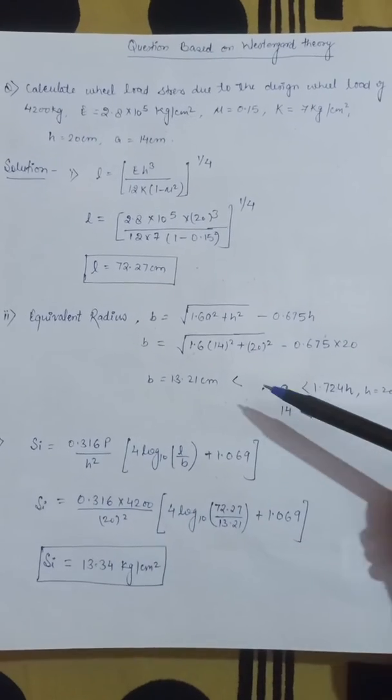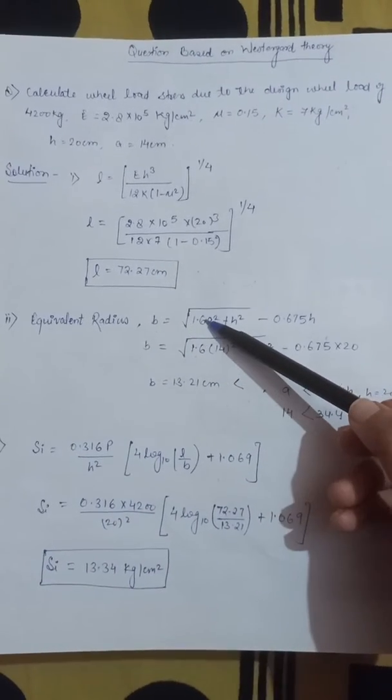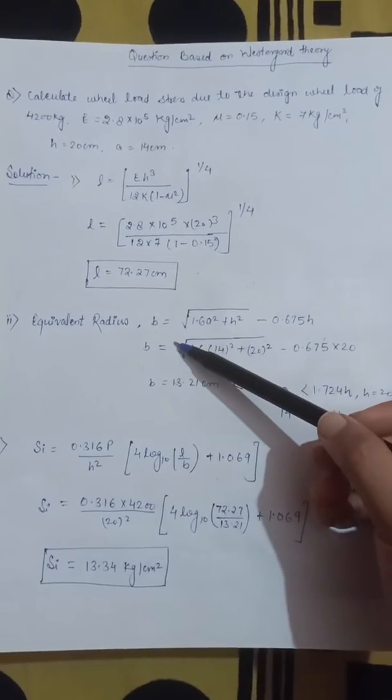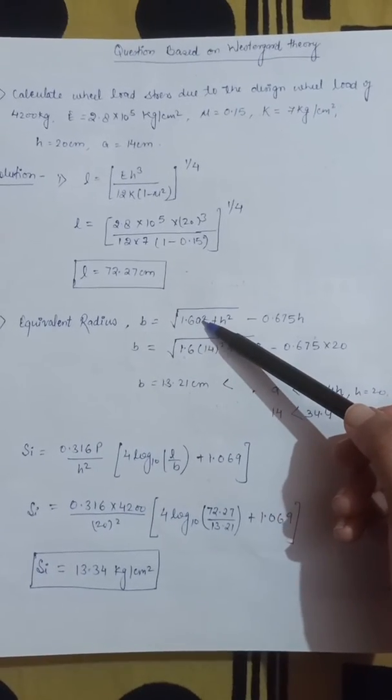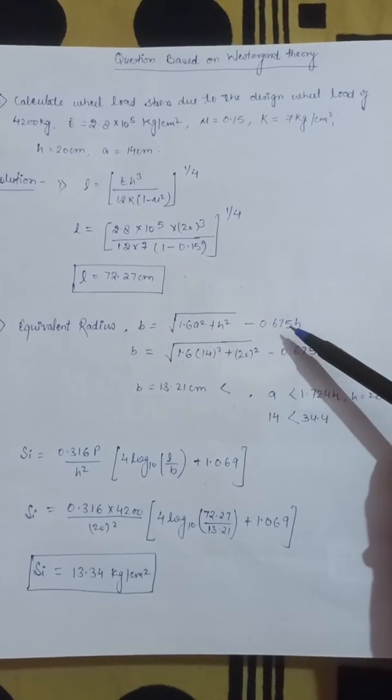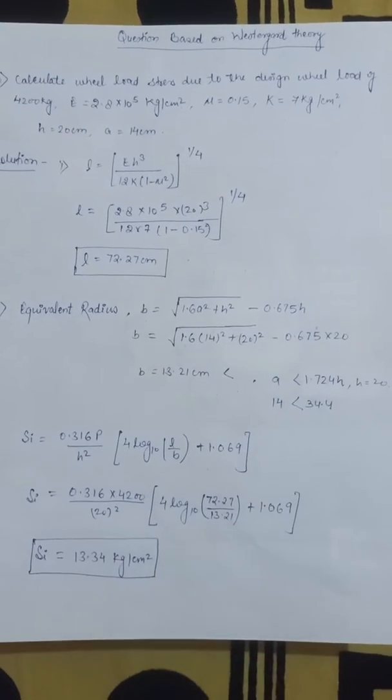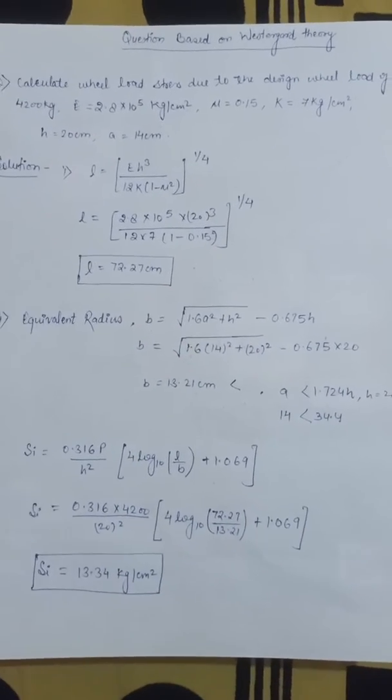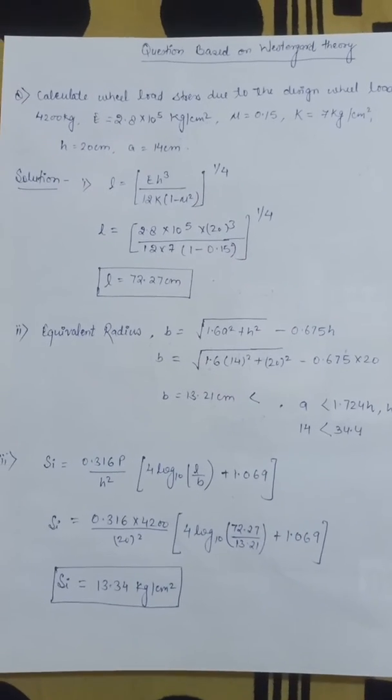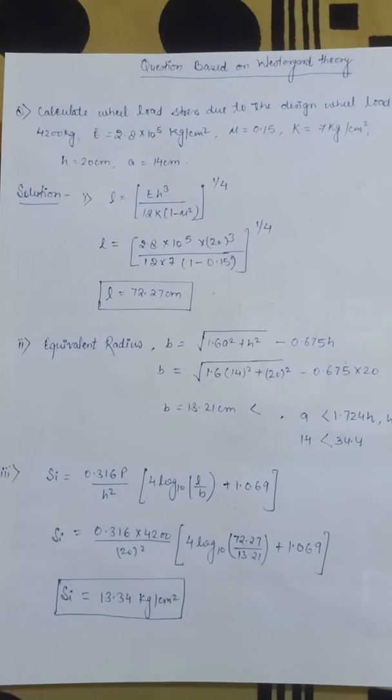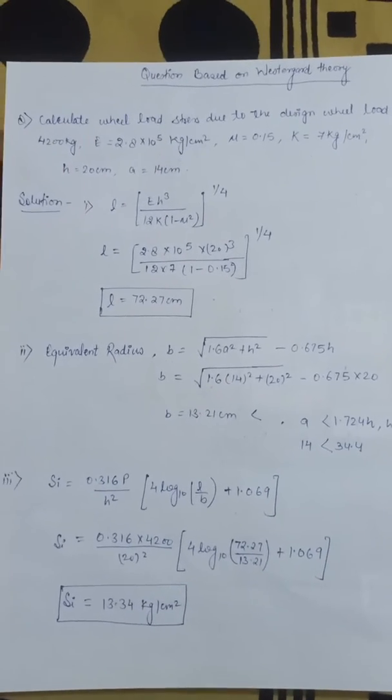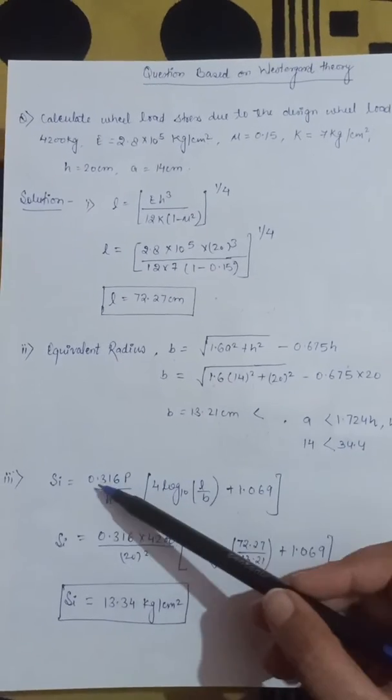This means that we have to calculate b's value using this formula. So b's value is √(1.6a² + h²) - 0.675h. So b's value is 13.21 cm. Now we have two values: relative stiffness and equivalent radius. Now we will start stress at interior region.